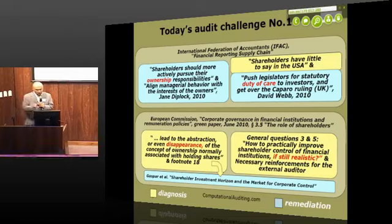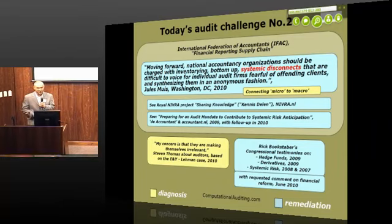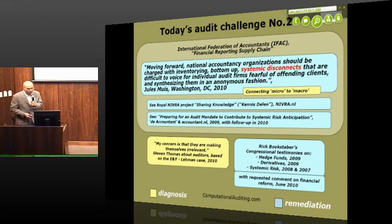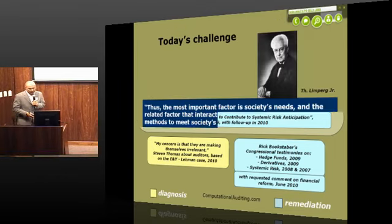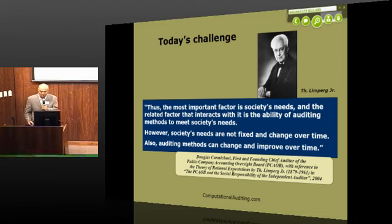The focus is on every individual audit, and the second challenge is relating that micro role of the auditor to a macro level — systemic risk anticipation for financial institutions and other corporations. Jules Muys has contributed to that on the IFAC. The point is especially to increase the relevancy of the audit contribution, relating that to Douglas Carmichael's statement for the PCAOB: the most important factor is society's needs, and then find the audit methods that can serve those needs.